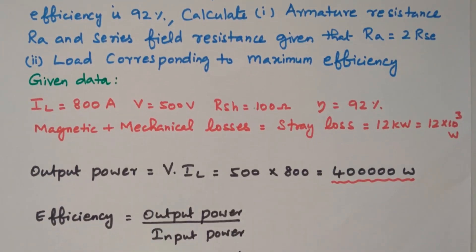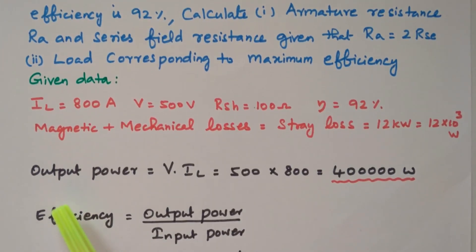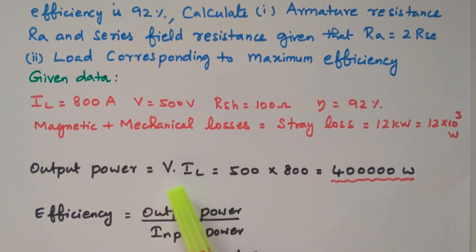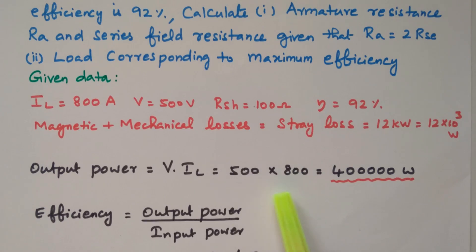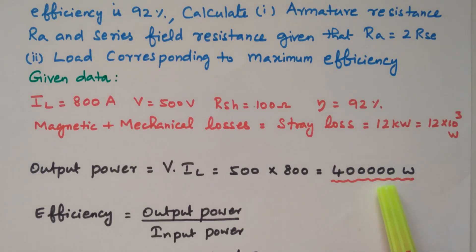First, we will find the output power: output power = V × IL = terminal voltage × load current = 500 × 800 = 400,000 watts (4 lakhs watts).